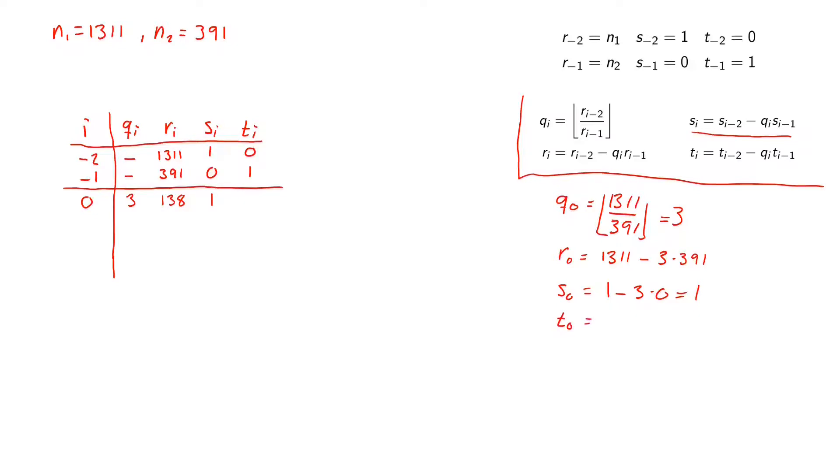t_0 will be t_{i-2} which is 0 minus q_i which is 3 times t_{i-1} which is 1, and this will be equal to minus 3. So we update this as minus 3. And then we just continue to the next row.